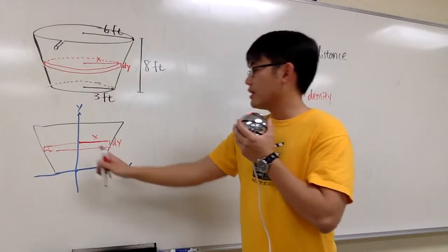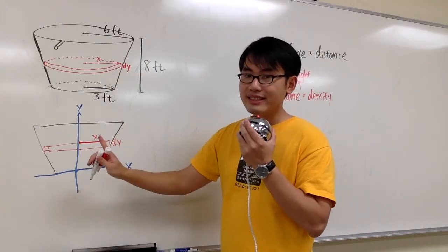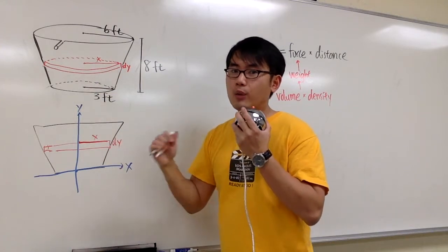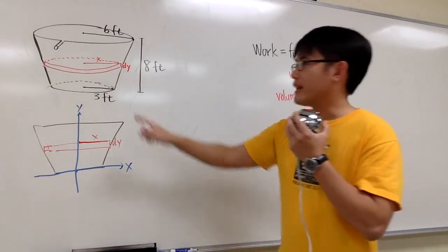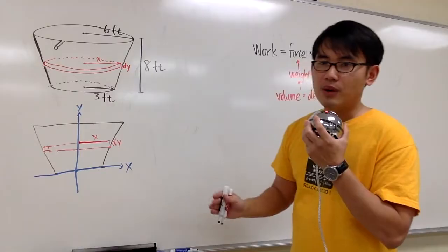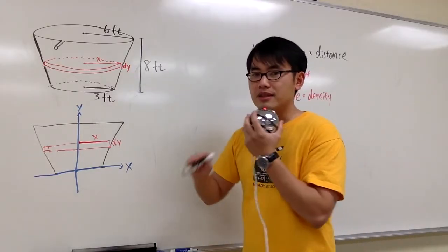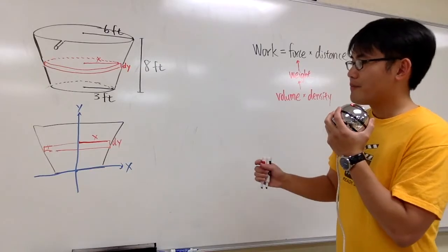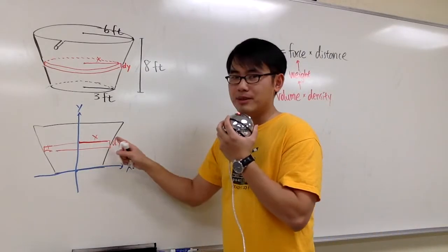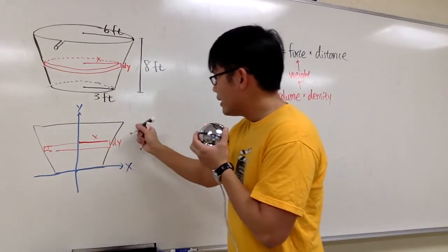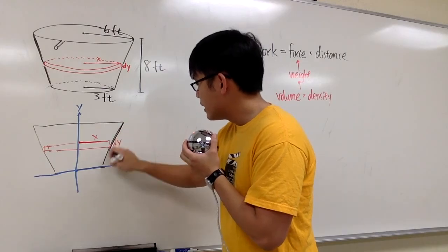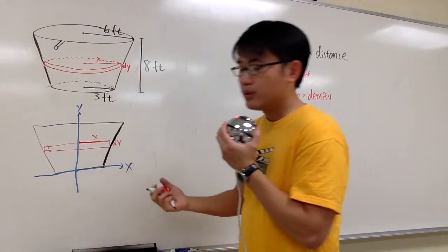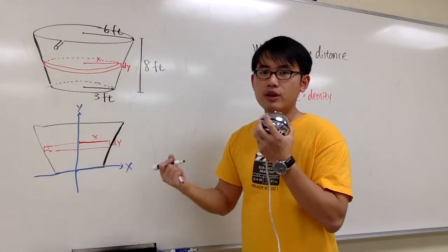We just need the x, not 2x, because the x is the radius of this disk, and we just need pi r squared times thickness. That will give us the volume of the disk. This is not a rectangle, so we don't need 2x. Now, how can we write x in terms of y? Well, this right here is a line. What we can do is figure out an equation of this line.